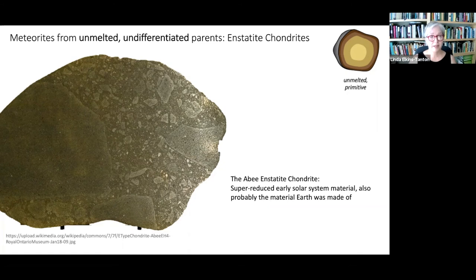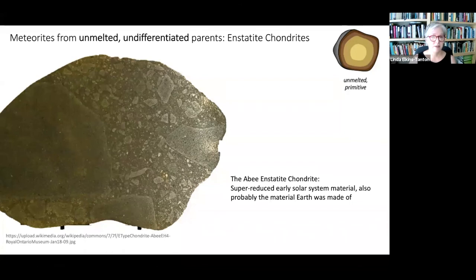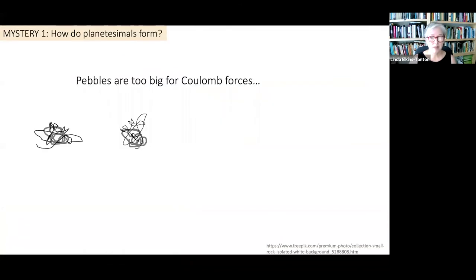To make a planetesimal like the one that gave us this meteorite, we have to get the calcium-aluminum inclusions, chondrules, dust, and all the little bits in the disk to clump together. This is not so easy. Within the first one to two million years almost all the material of the disk is in pebbles, and then the mystery is how we get from dust and pebbles to planetesimals. It's not really obvious. This is mystery number one: how do planetesimals form?